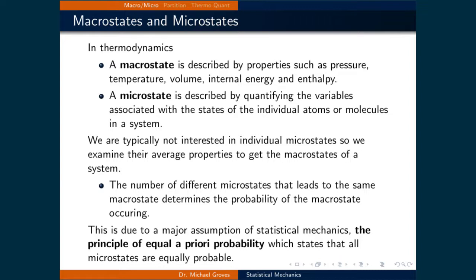In thermodynamics, a macrostate is described by properties such as pressure, temperature, volume, internal energy, and enthalpy. A microstate is described by quantifying the variables associated with the states of the individual atoms or molecules in a system. Think of a macrostate as a group of similar microstates. We are generally not interested in individual microstates since it's the macrostate of a system that we measure as a property of the system.